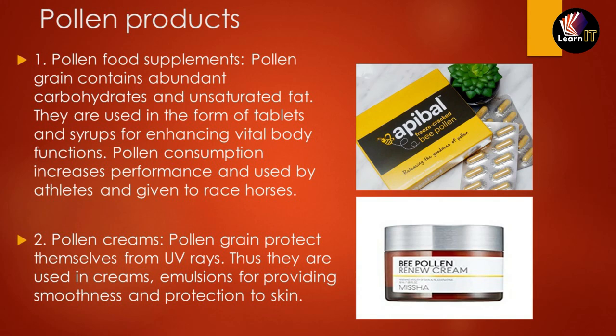The next topic is pollen products. The first is pollen food supplements, which are rich in carbohydrates and unsaturated fats, available as tablets and syrups that enhance the vitality and functioning of the body — they are given to athletes and also to racehorses. The second use is in pollen creams, which protect against UV rays and are used in cosmetic products like emulsions for providing smoothness and protection to skin.